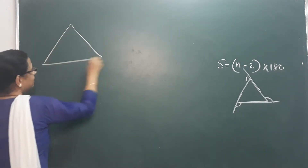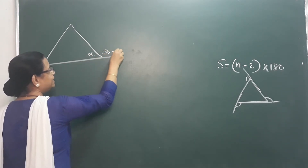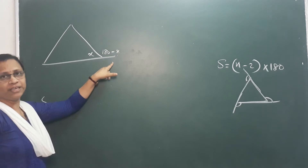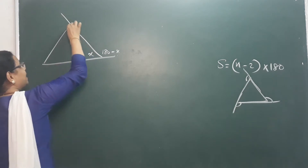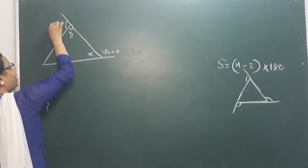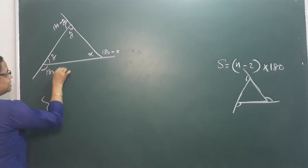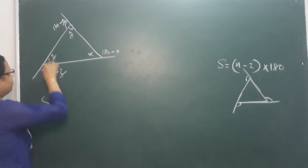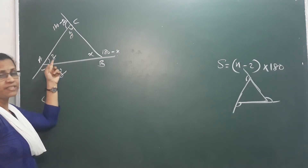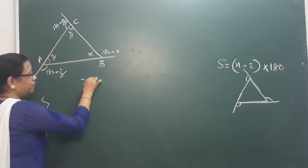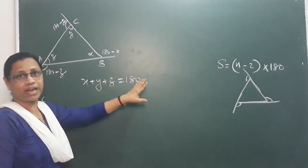Consider a triangle. This triangle has outer angles. The outer angle forms a linear pair with the inner angle. Let's take a practice problem: the interior angles of the triangle are x, y, and z. So the corresponding outer angles are (180 minus x), (180 minus y), and (180 minus z). The angle sum property of a triangle gives us x plus y plus z equals 180.